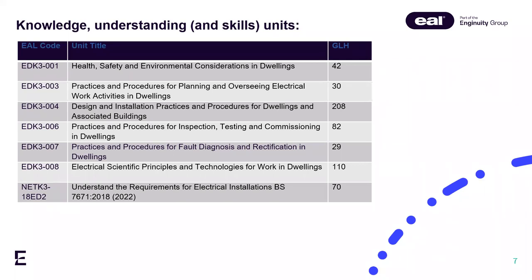Unit 4 covers all the installation and technology requirements and also connection and termination of wiring systems, older wiring systems and practices commonly encountered in dwellings — it's a very comprehensive unit. Within Unit 4, learners will really start to explore BS 7671, building regulations, approved documents and other standards and industry guidance.